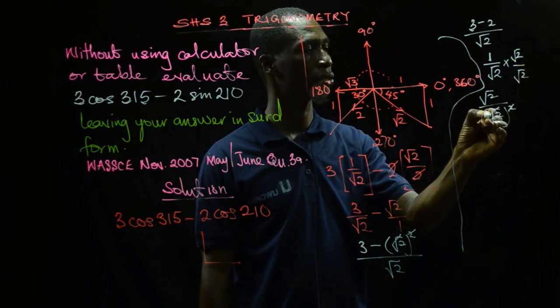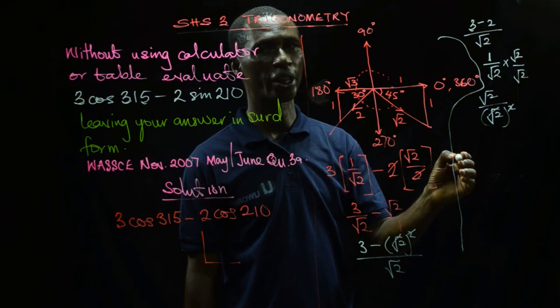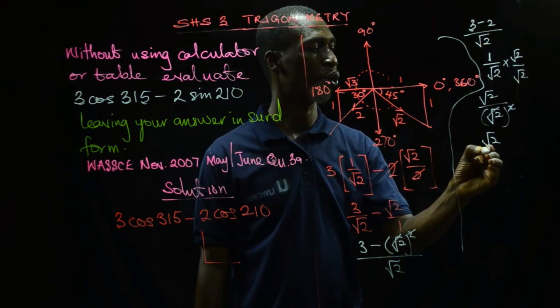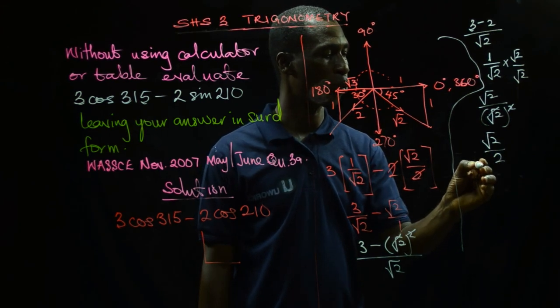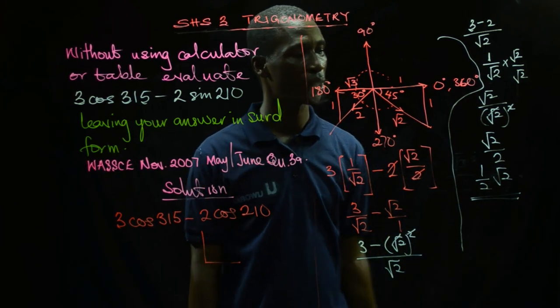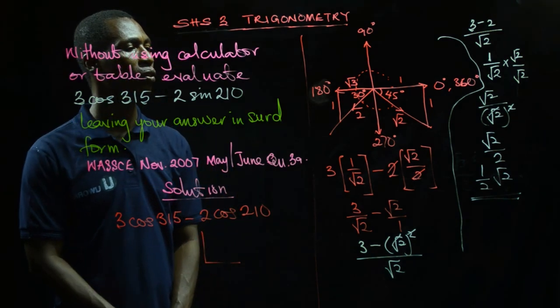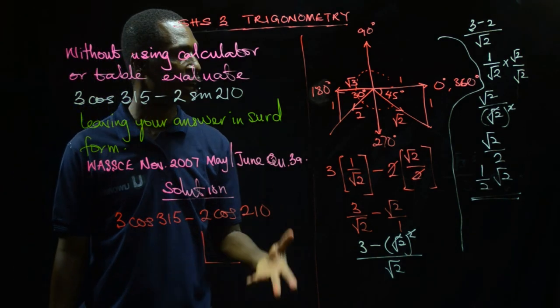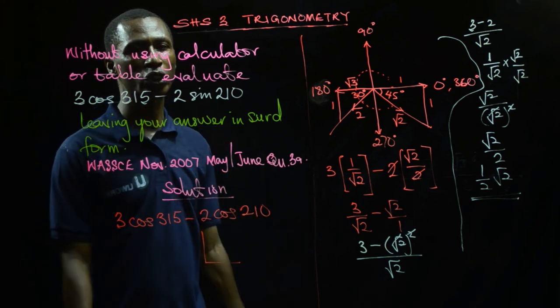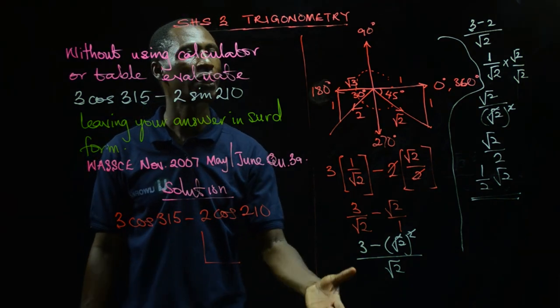Now √2 cancels the square. Finally we're going to get our final figure to be √2/2, which equals 1/√2. This is how you leave your answer in surd form. We will continue by solving further past questions on this aspect before we go to the application of trigonometry and the sine and cosine rules.